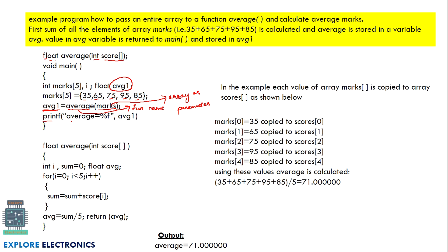Finally, we print the value of average1. When we call this function, control shifts to the average function. The compiler sees it will receive an integer-type array. The marks array is passed so that marks[0] is copied to score[0], marks[1] to score[1], and so on. A local copy of the actual array is created inside the function.